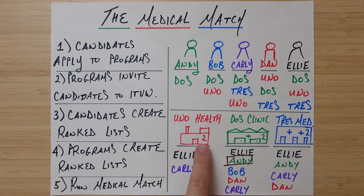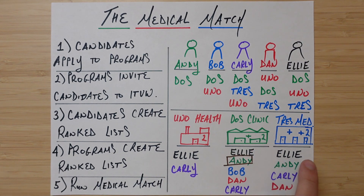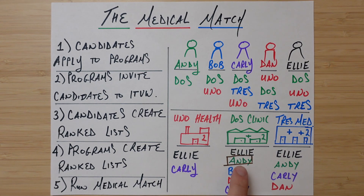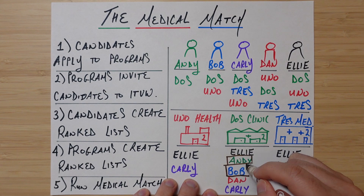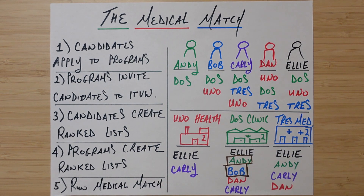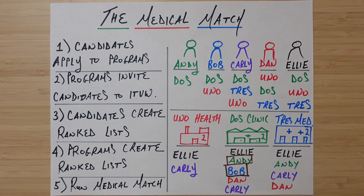Each clinic or program has two spots — two spots for Uno Health, two spots for Dose Clinic, two spots for Trace Medical. There's another spot open at Dose Clinic because only Andy is temporarily matched. Bob is on the list, so Bob also gets a temporary match there.